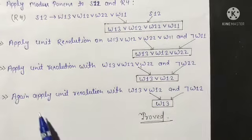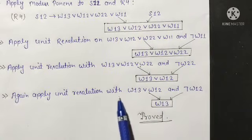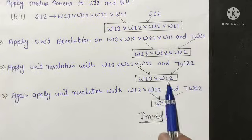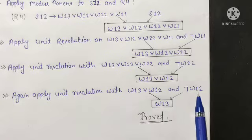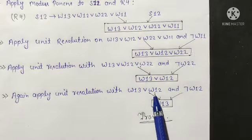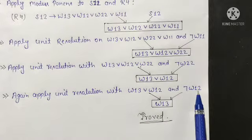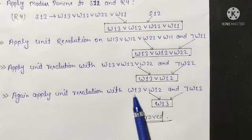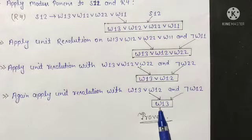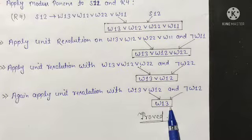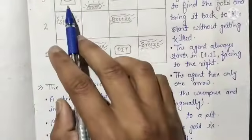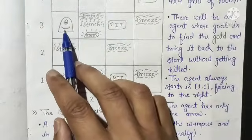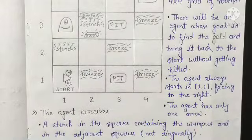That means there is one Wumpus in room 1,3. We have already seen in the beginning there is one Wumpus in room 1,3. So we have proved it. Thank you.